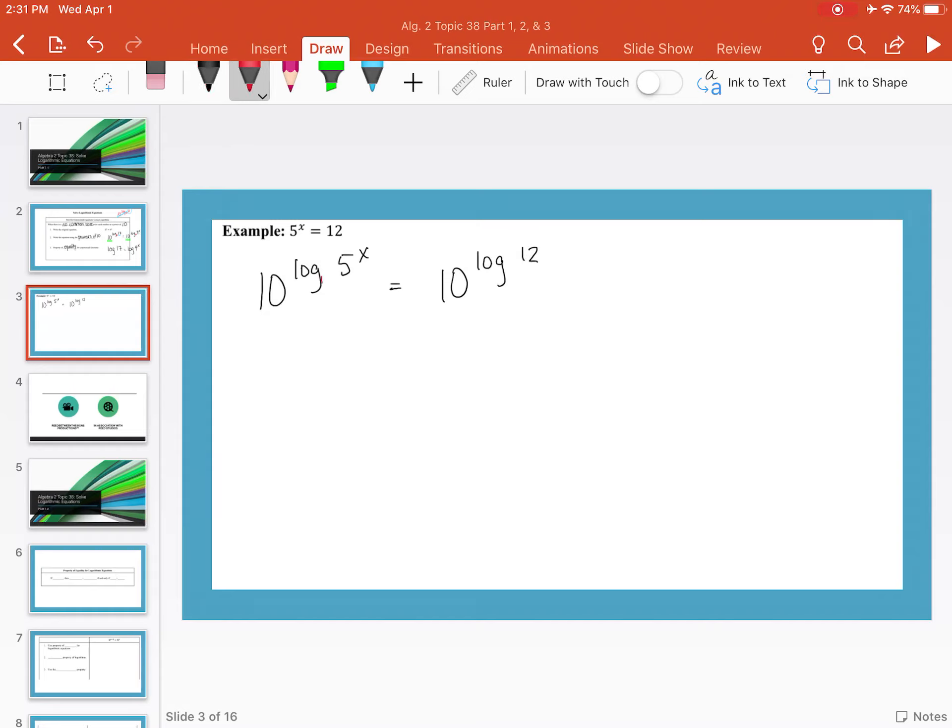And again, we know that these are equal because these both have a base of 10 and it would just reduce. So we'd be left with 5 to the x equals 12, our original equation. We can rewrite this since our bases are the same as just log of 5 to the x equals log of 12.